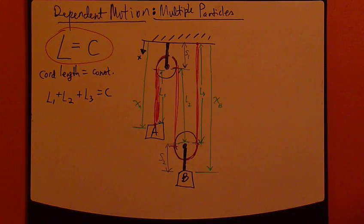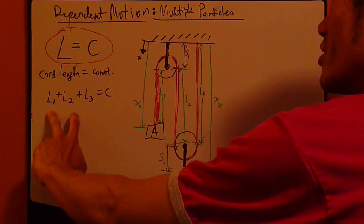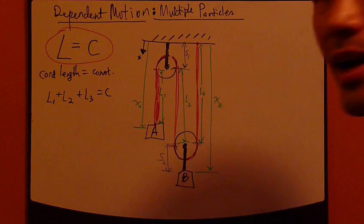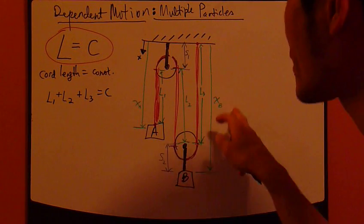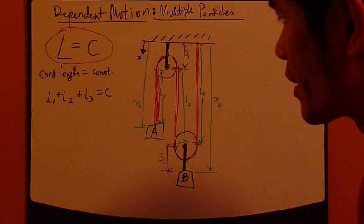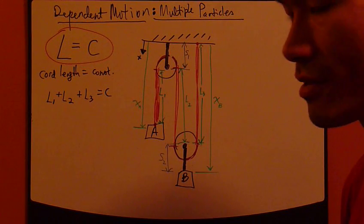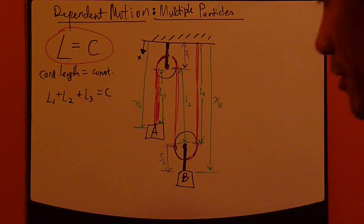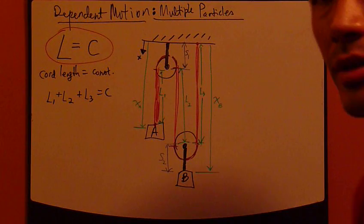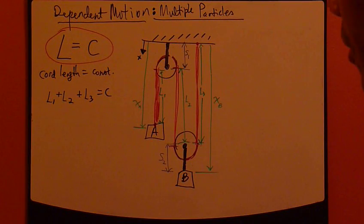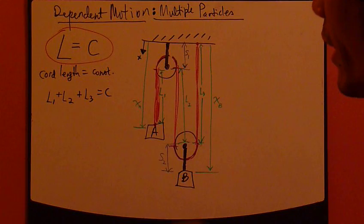Now, I don't want to just stick with L1, L2, and L3. Actually, I want to bring in X, because that's more of a formal definition of displacement, right? And then from X, we can get velocity later. Let's look at the relation between L1 and X.